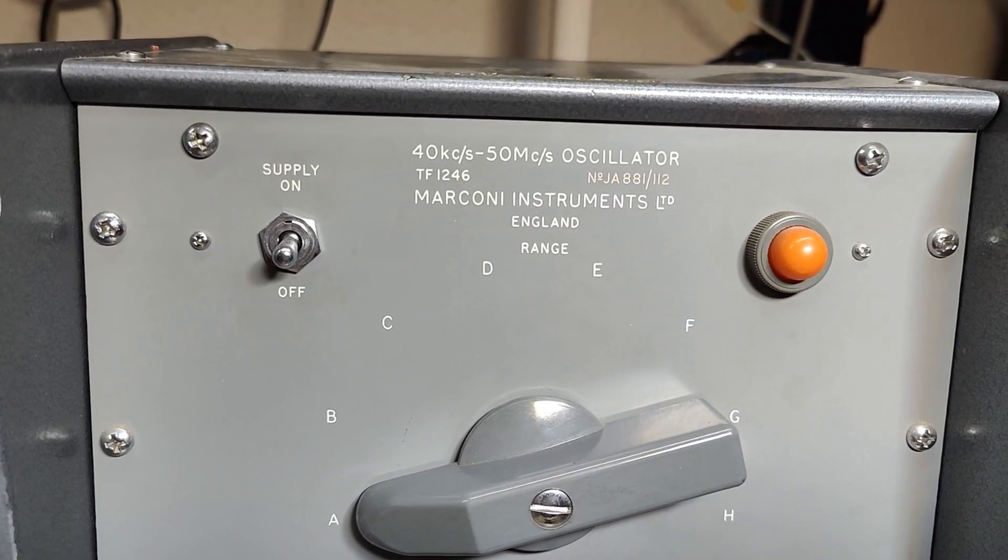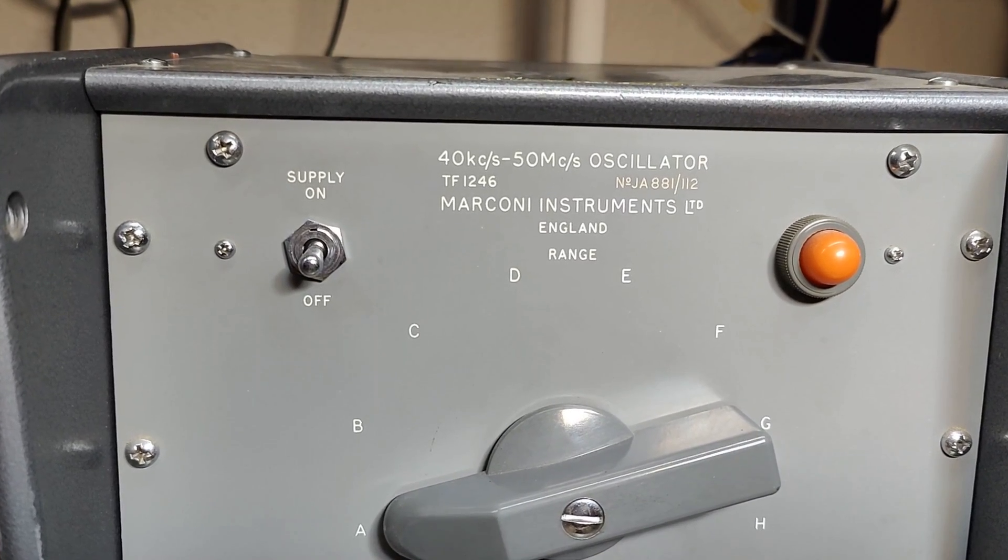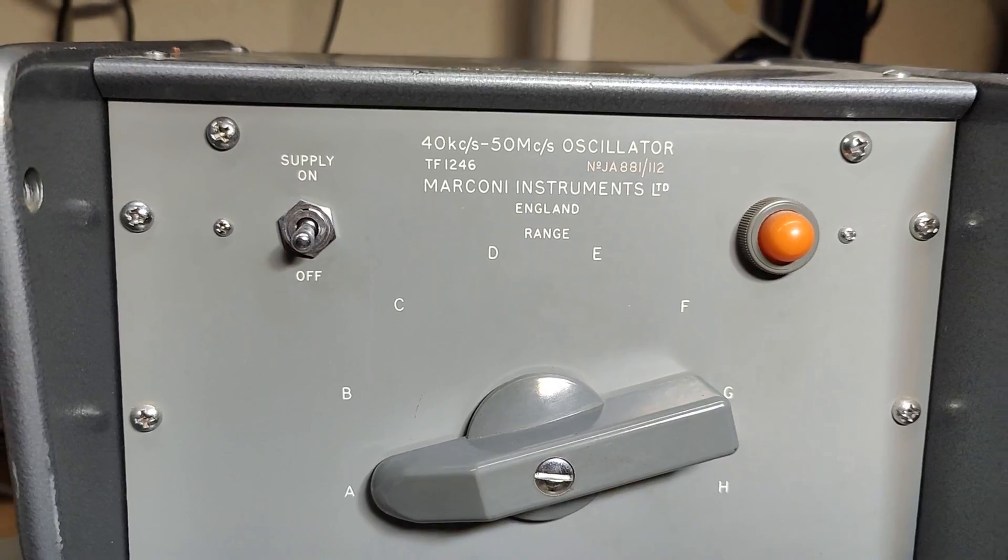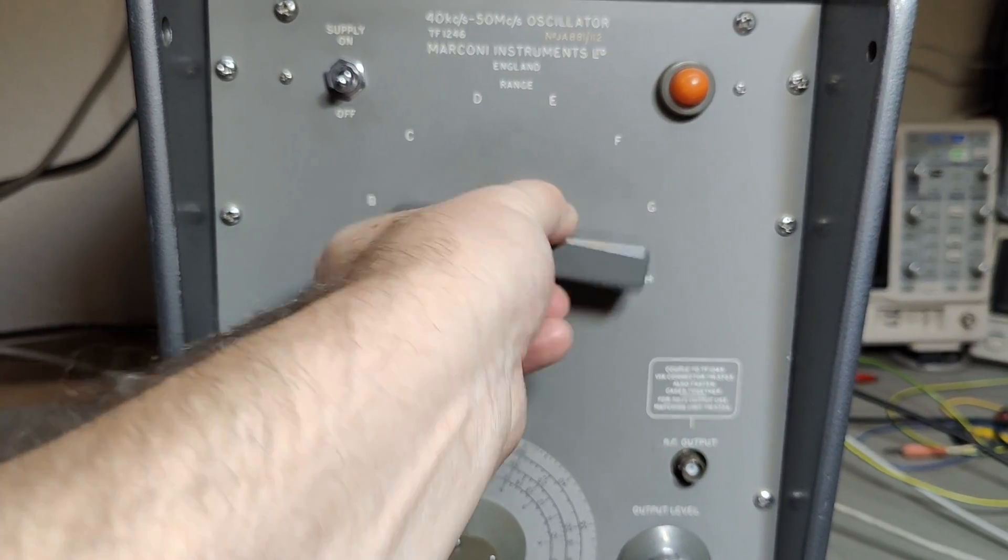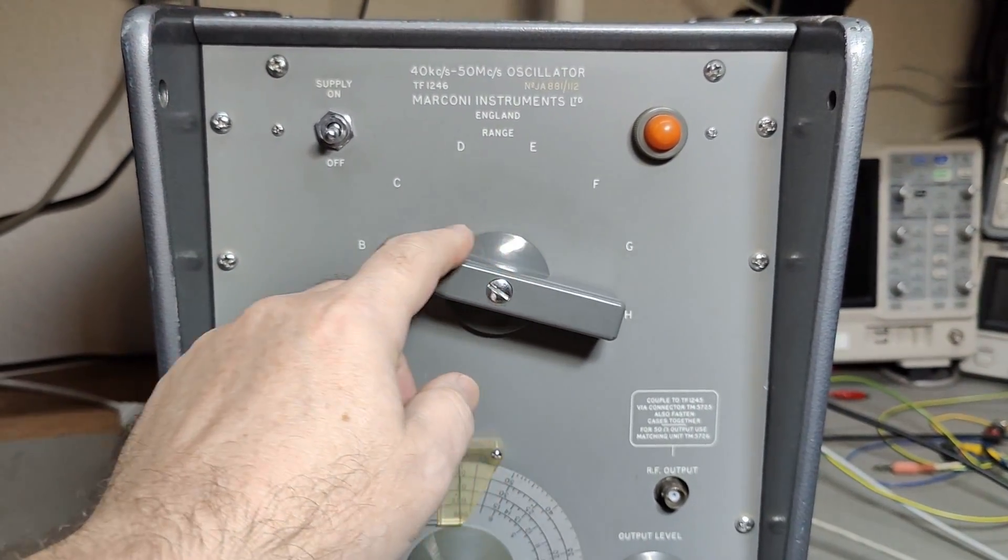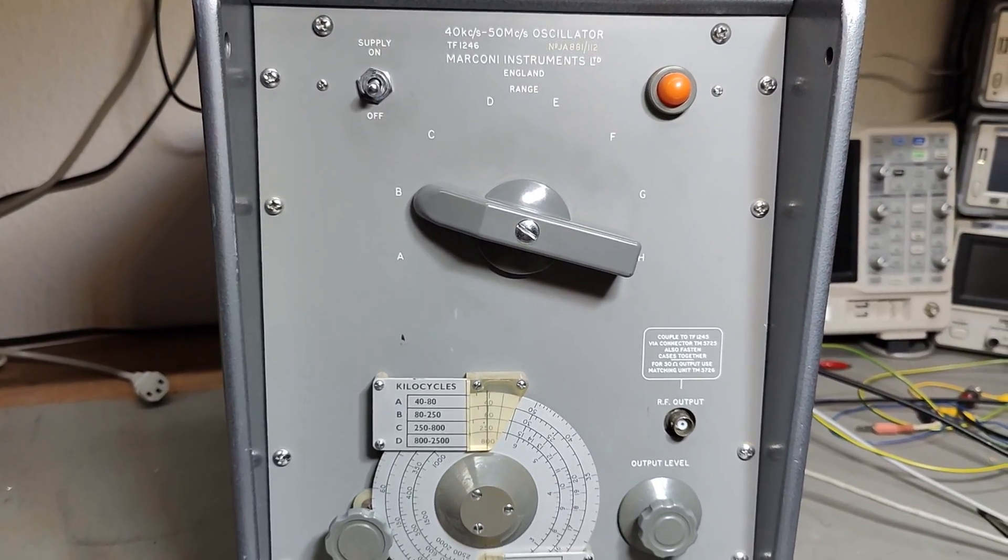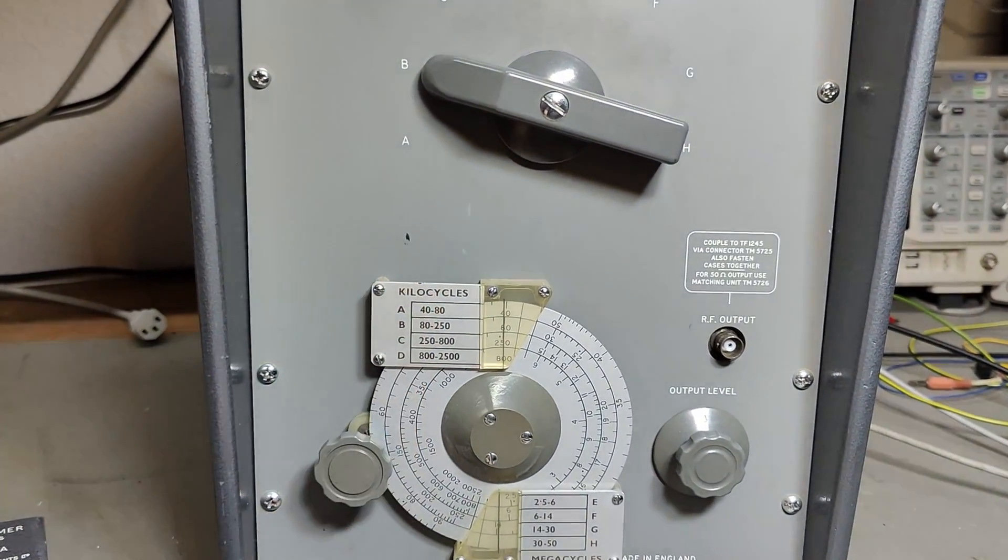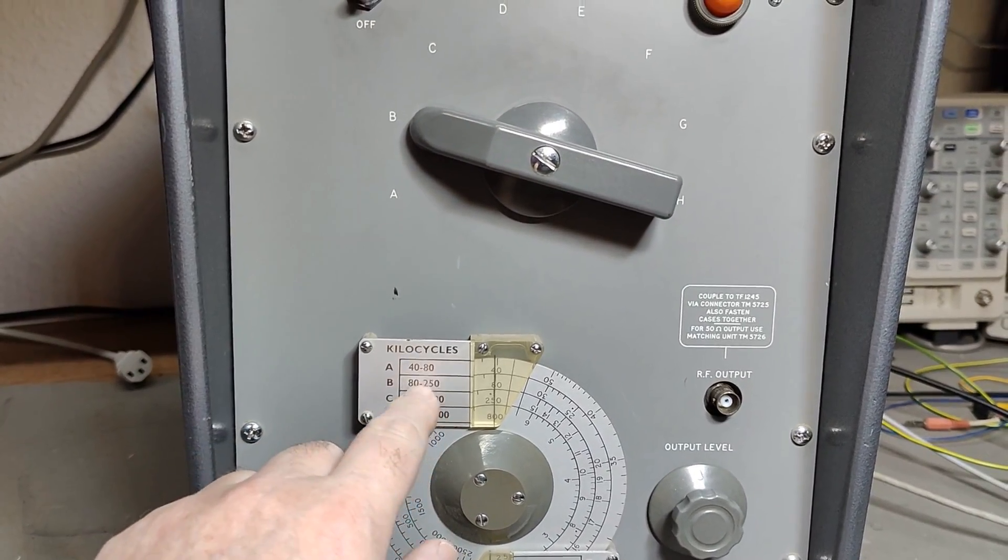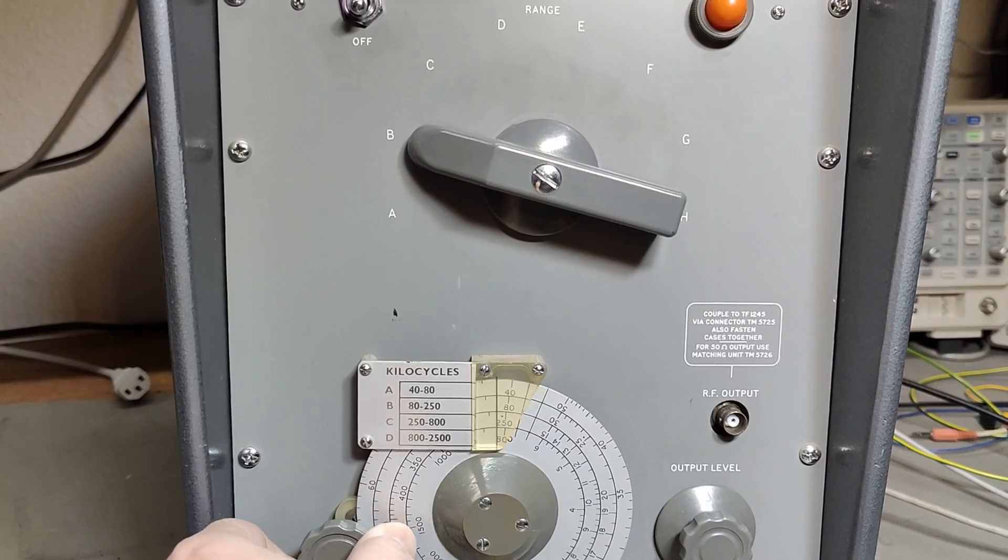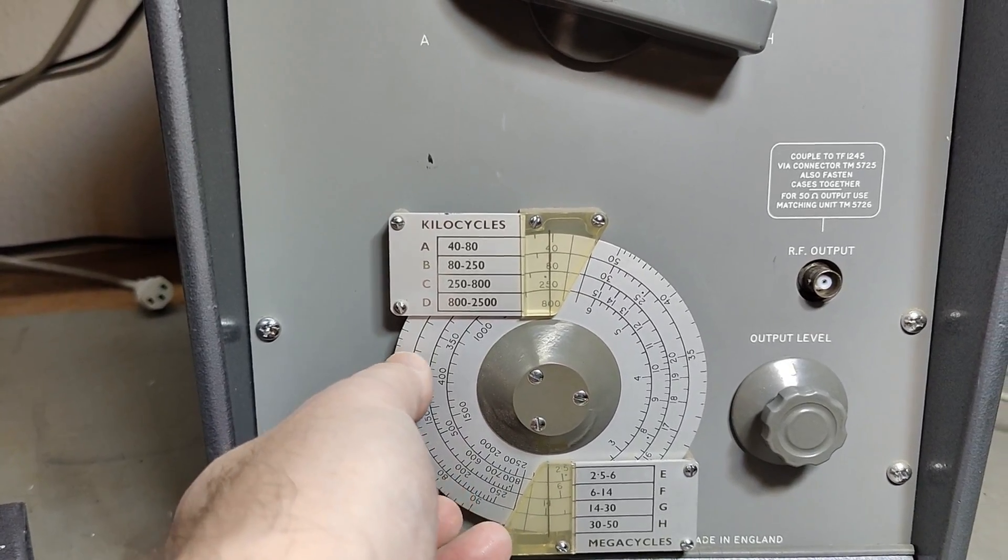They just call this an oscillator from 40 kilohertz to 50 megahertz. We got eight ranges. And by the feel of this, I already know there is a big carousel switch in this unit. So the eight ranges, they cover the frequency band, and I think there's a little bit of overlap because if we look at the stop, it goes a little bit beyond.